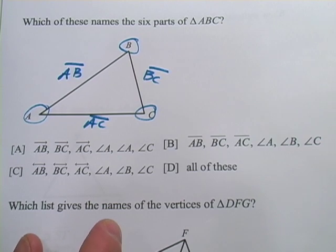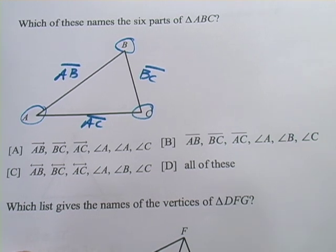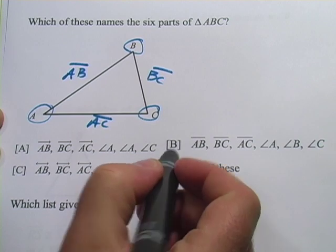And that's really all there is to it. Those are the six parts of a triangle, three vertices and three line segments. So the correct answer here, let's see, looks like it's going to be B.